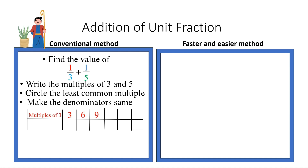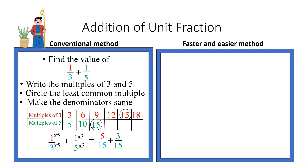Let us list multiples of 3: 3, 6, 9, 12, 15, 18, etc. Multiples of 5: 5, 10, 15 — 15 is the least common multiple, and we have circled it. Write again 1/3 plus 1/5 and make the denominators 15 as you have learned in equivalent fractions. Multiply the numerator and denominator here by 5, here by 3, and you get 5/15 plus 3/15. 5 plus 3 is 8, and 8/15 is the answer. In addition of like fractions, add the numerators and keep the denominators the same, so we get 8/15.